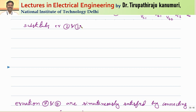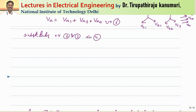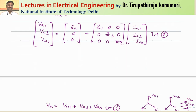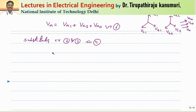Now I am substituting equation number 2 and equation number 3 into equation number 4. Equation number 2 gives IB equal to 0 and IC equal to 0. Substituting into the sequence component equation, since IB and IC are zero, only the IA terms remain. So IA1 will become equal to (1/3)·IA. Similarly, IA2 also becomes (1/3)·IA, and IA0 becomes (1/3)·IA because IB equals IC equals 0. So we get IA1 equal to IA2 equal to IA0 equal to IA divided by 3. Let us take this as equation number 7.